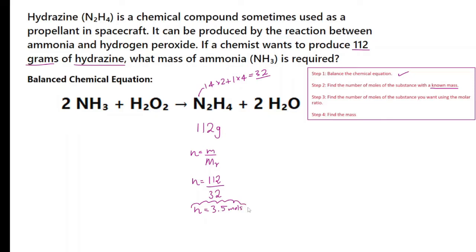Now we know the number of moles of hydrazine is 3.5. The question is what mass of ammonia is required? Let's look at the molar ratio now. You can see the molar ratio of hydrazine to ammonia is 1 to 2. So whatever the number of hydrazine you need, twice as many ammonia moles. So all you need to do is multiply it by 2. 2 times 3.5, so we know that we need 7 moles.